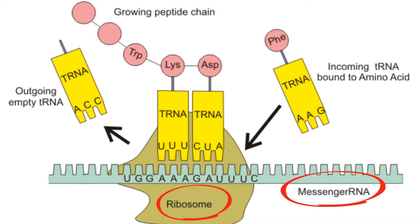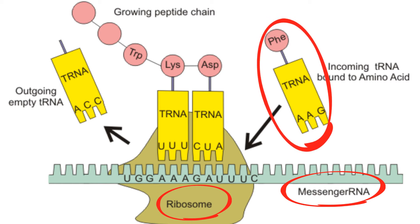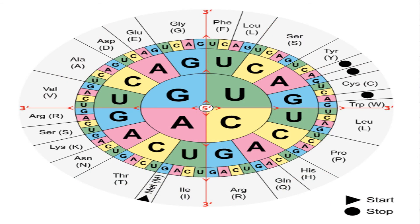At the ribosome, the mRNA is read in triplets called codons by transfer RNA. Each codon is a code for a particular amino acid. Here is a chart of each codon and the amino acid that pairs up with it.